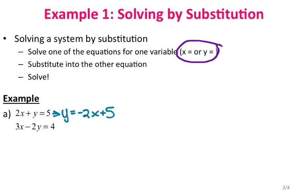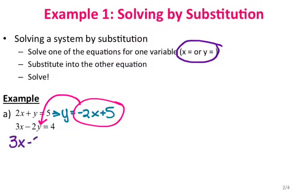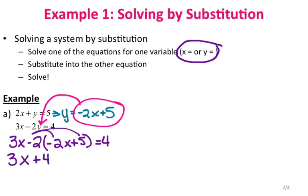Since I now have y by itself, I can make a substitution. I'm going to take y equals negative 2x plus 5 and substitute it in for y in my other equation. So I can rewrite the other equation as 3x minus 2 times negative 2x plus 5 equals 4. Distributing the negative 2 into the parenthesis gives me 3x plus 4x minus 10 equals 4.